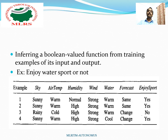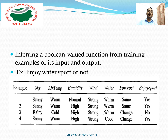Each example is considered as one hypothesis and the result is a conjunction of all attribute values. The task is to learn and to predict the value of enjoy sport for an arbitrary day, based on the values of other attributes.